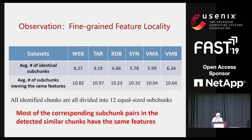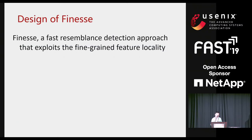Also note that as we generate multiple super features, only one super feature match is needed for resemblance detection. Therefore, if most of the features are identical, there must be at least one super feature that is identical. Based on this observation, we present a faster resemblance detection method called PHILESS. The goal of PHILESS is to accelerate the speed of resemblance detection by exploiting fine-grained feature locality and to reduce the probability of false positives in resemblance detection.